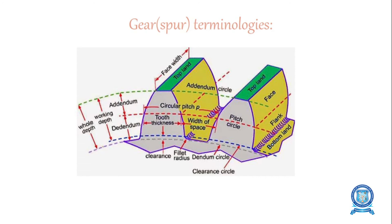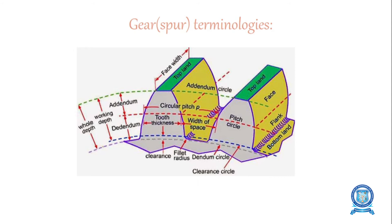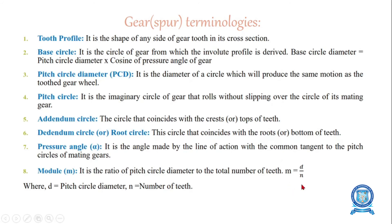Pressure angle alpha is the angle made by the line of action with the common tangent to the pitch circles of mating gears. Module m is the ratio of pitch circle diameter to the total number of teeth: m = d/n, where d is the pitch circle diameter and n is the number of teeth.